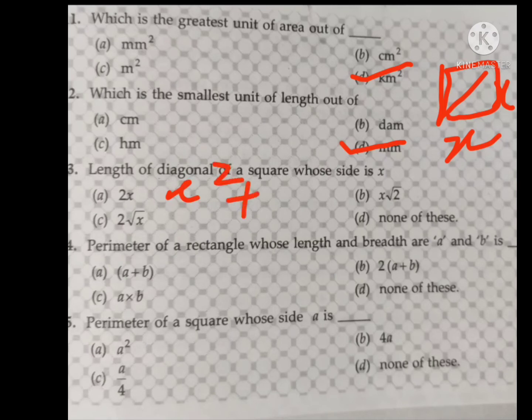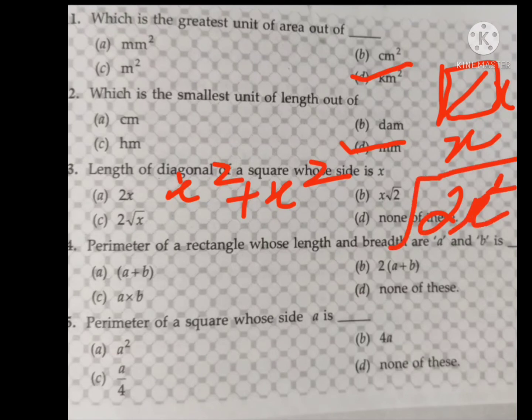So let us draw the square whose sides are X. We will use the Pythagoras theorem, that is X square plus X square is equal to... one second... it is equal to 2X square under the root. So it becomes equal to X root 2.